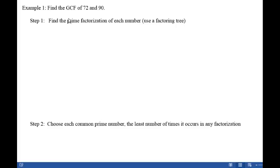Example 1, find the GCF of 72 and 90. Step 1, find the prime factorization of each number using a factoring tree. So let's start with 72 and break it down into prime factorization.